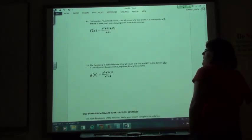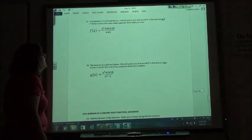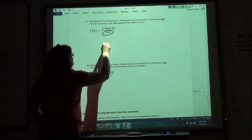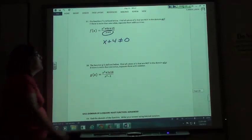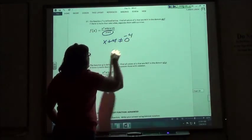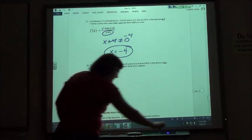Number 17 then. Again we have a fraction, and we want to find the values that are not in the domain. In this case, we just have x + 4 that can't equal zero. So moving the 4 to the other side, the only thing that is not in our domain is negative 4.